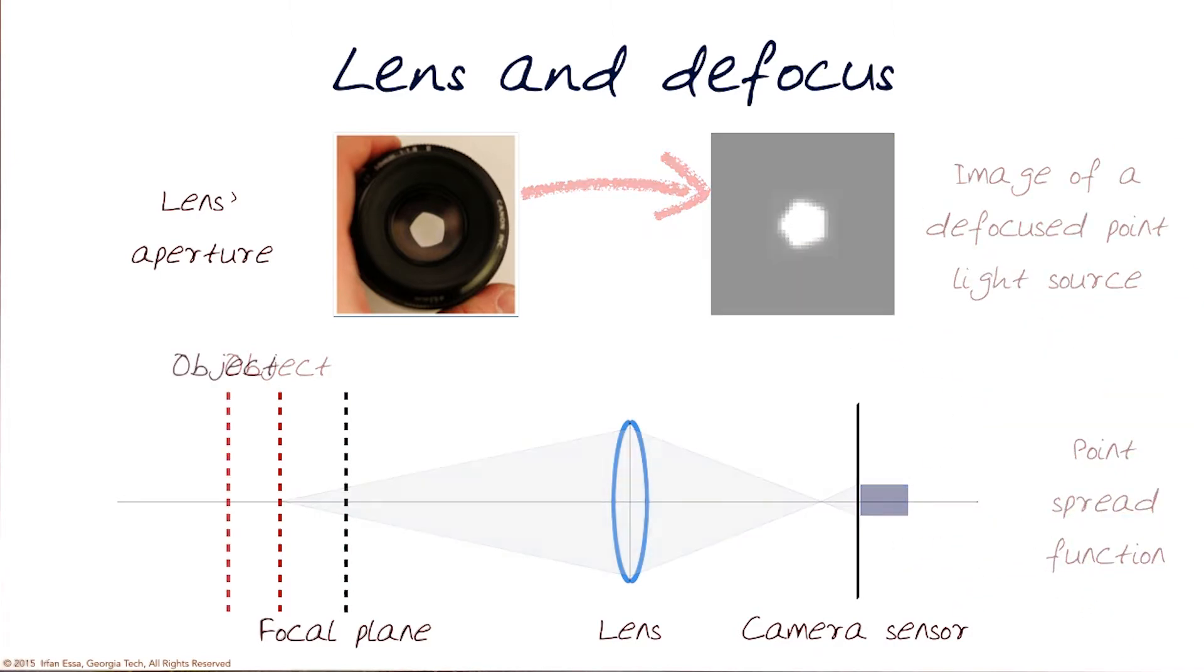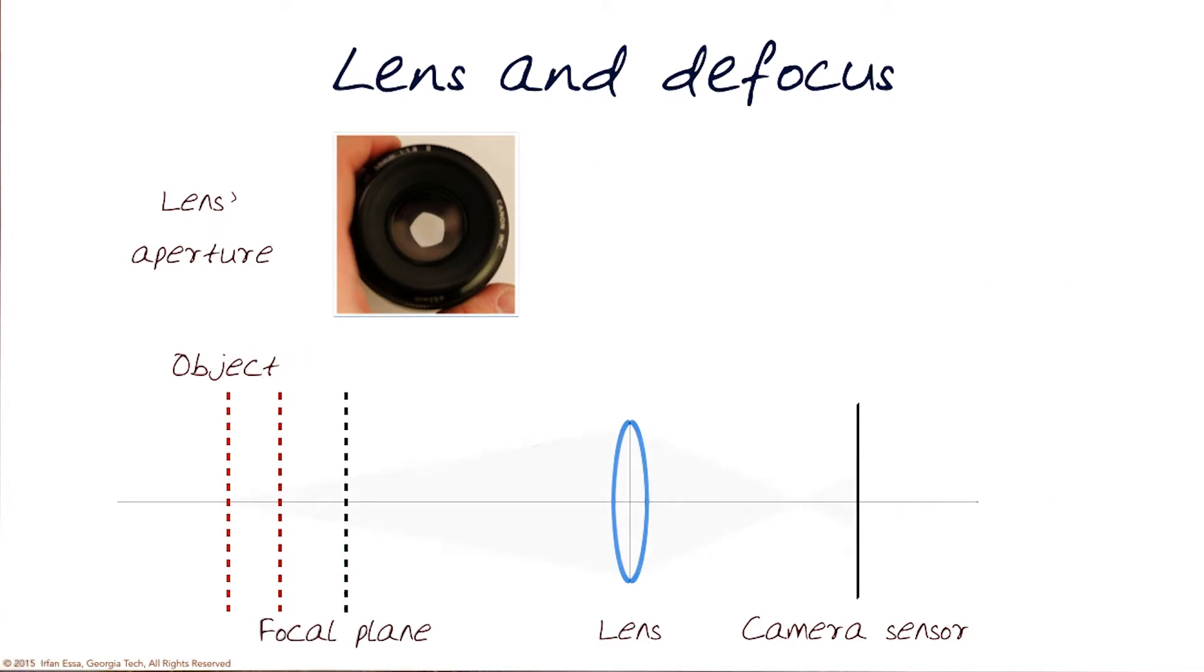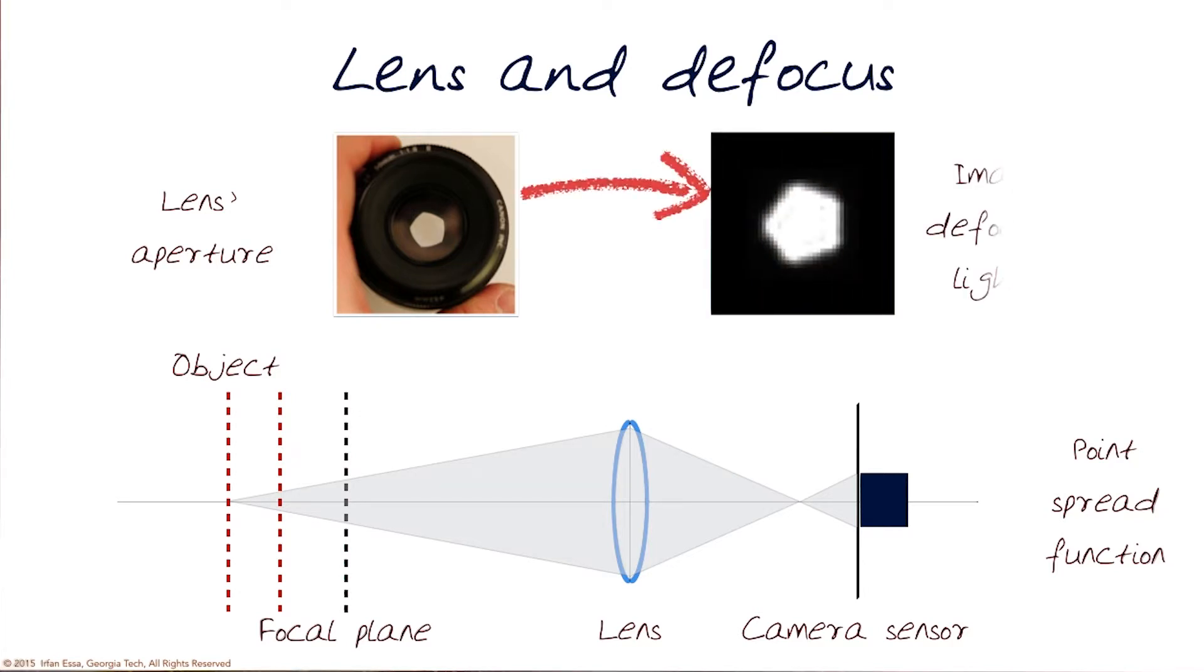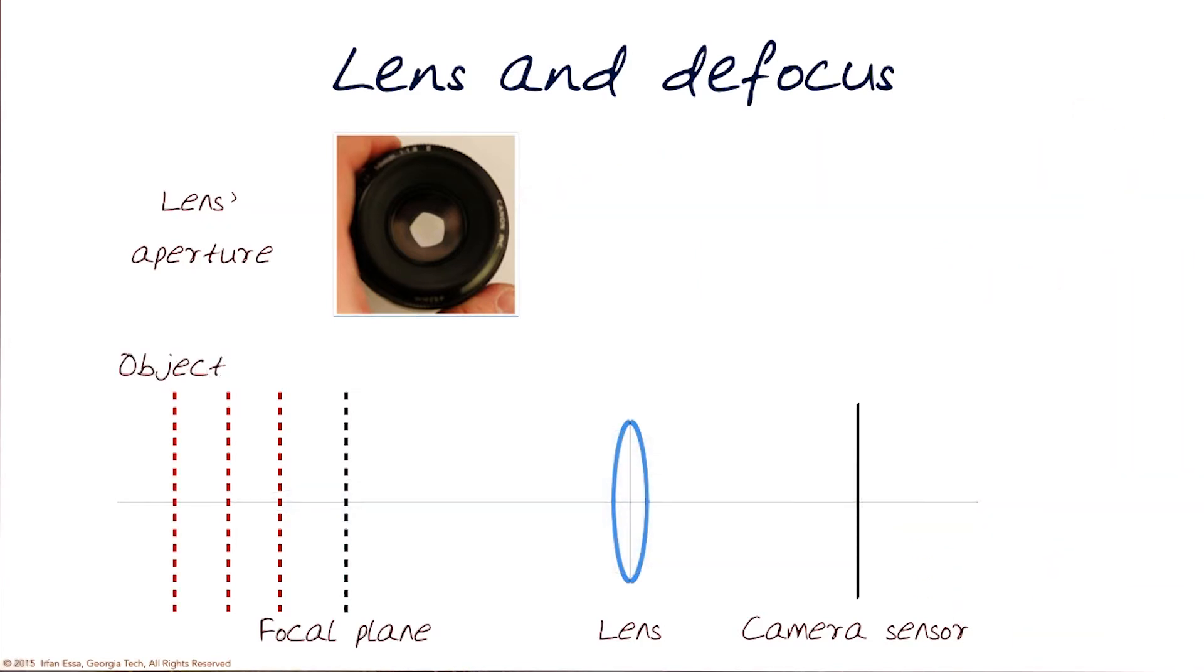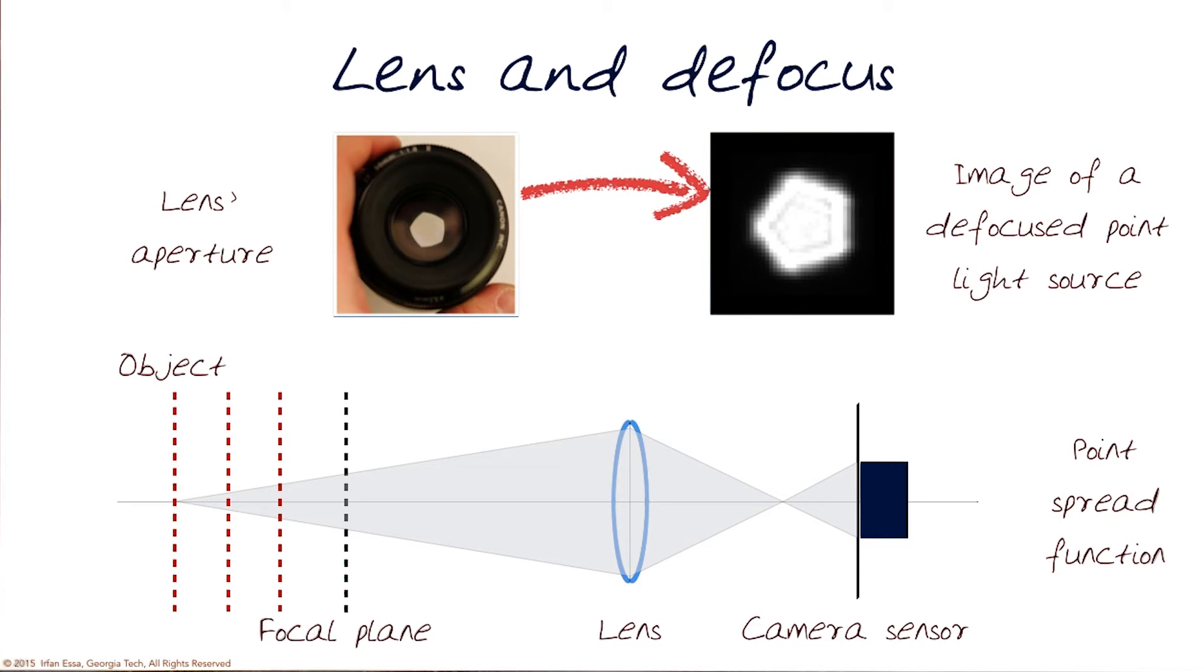Let's move the object further back. When we do this, you can notice that the point spread function gets wider. We also know that means the image of the defocused point light source would look bigger. To continue this exercise, we'll now do the last one, where we move this further away, and this is even wider. A bigger blob is showing up here, and it's a defocused point light source.